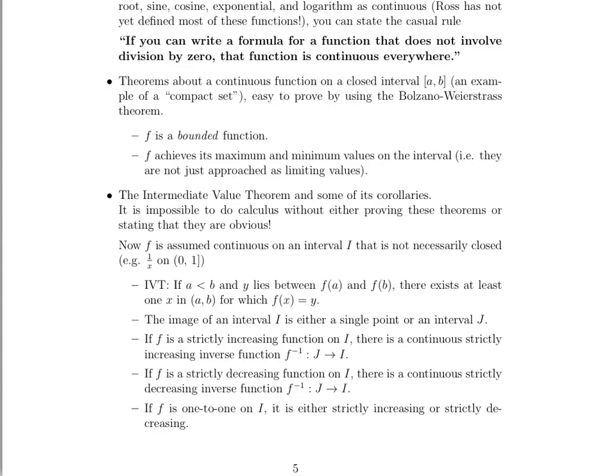F is continuous on an interval, not necessarily closed. The intermediate value theorem says that if A is less than B and Y lies between the function values f of A and f of B, then there exists at least one X in this interval from A to B for which the function value at X is equal to Y.